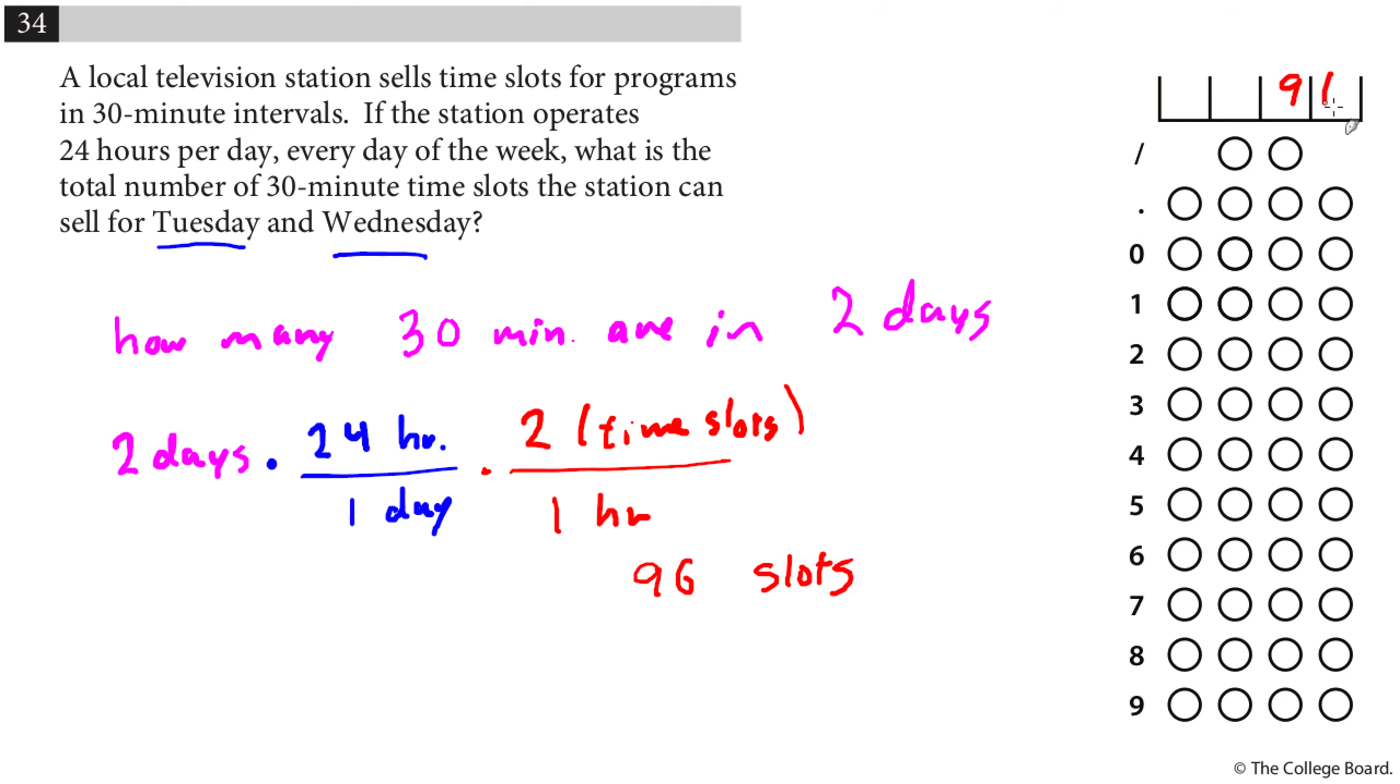And so I'll type in 96, bubble in 96. And just going back to this very briefly, I can see my days cancelled out, my hours cancelled out, I'm just left with the unit time slots. Now, I could do this other ways. I can just sort of think about this and say, okay, 30 minutes, so there are 48 each day, and then do 48 plus 48. There's many ways to get there. But somehow I need to connect with the idea that there are two time slots per hour, 24 hours each day. Okay, we'll finish off this test in tomorrow's video.